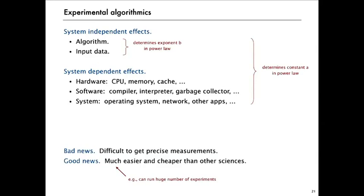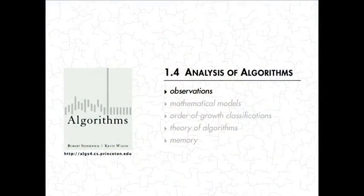So in modern systems, there's so much going on in the hardware and software, it's sometimes difficult to get really precise measurements. But on the other hand, we don't have to sacrifice animals or fly to another planet the way they do in other sciences. We can just run a huge number of experiments and usually take care of understanding these kinds of effects.